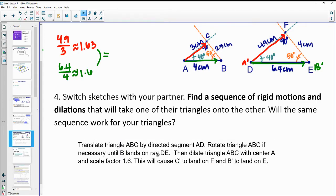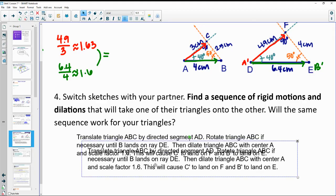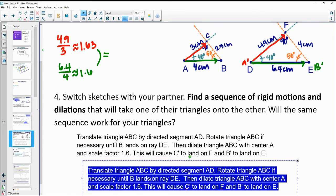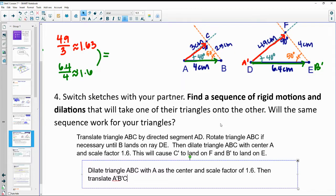Now, you could have done this a different way too. You could have started by dilating if you wanted to. So if you wanted to dilate the triangle first, so dilate ABC with A as the center and scale factor of 1.6. This will make it the same size as DEF. Then translate the dilated one by directed segment A prime D.